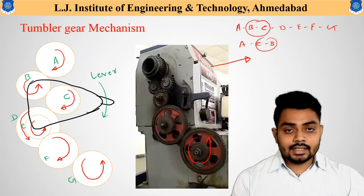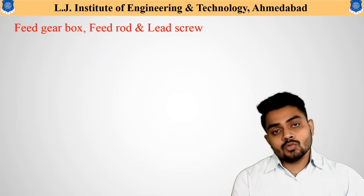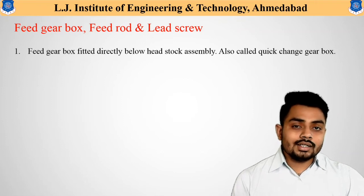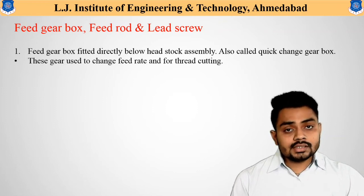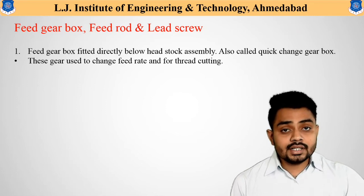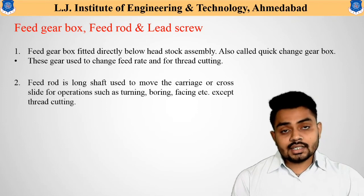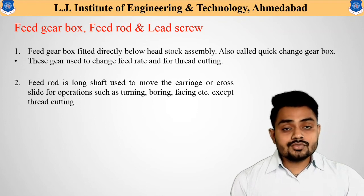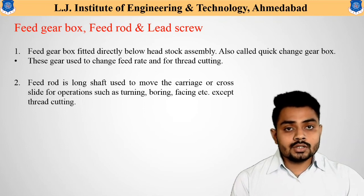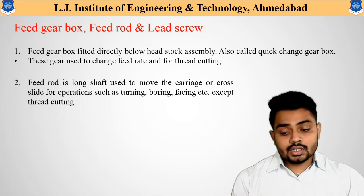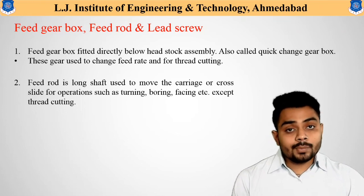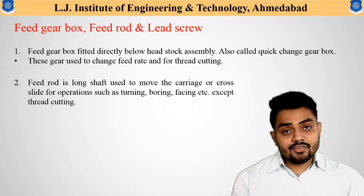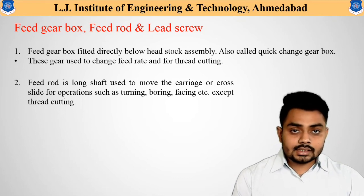Other important parts at the headstock section include the feed gearbox, which is helpful for obtaining different speed variations during machining and is also called the quick change gear box. Its main function is to provide speed variation during thread cutting operations. The feed rod is a long shaft used to provide automated movement to the tool via the carriage and cross slide for operations such as turning, boring, and facing. The feed rod is not used for thread cutting — for thread cutting, the lead screw is used.